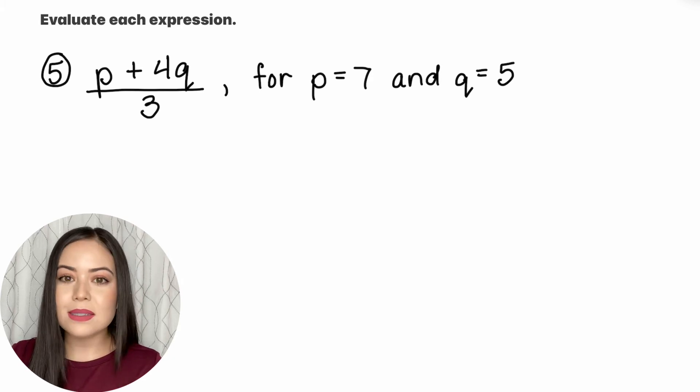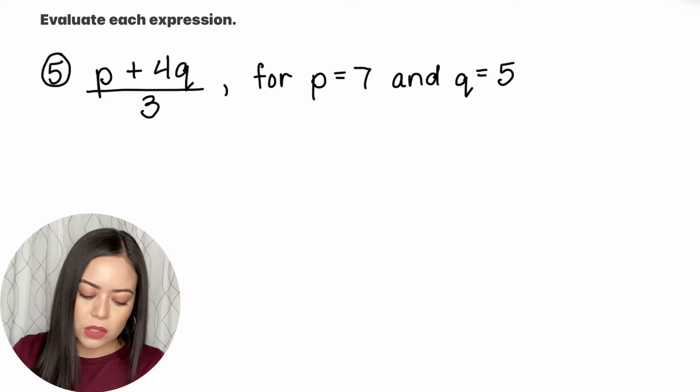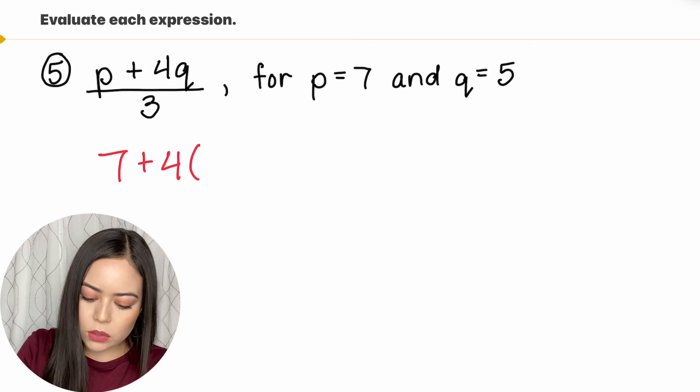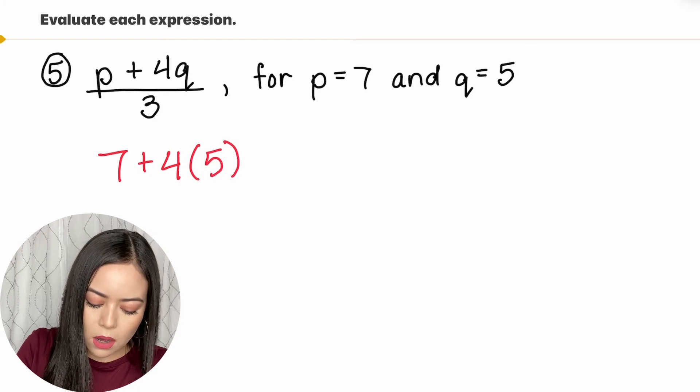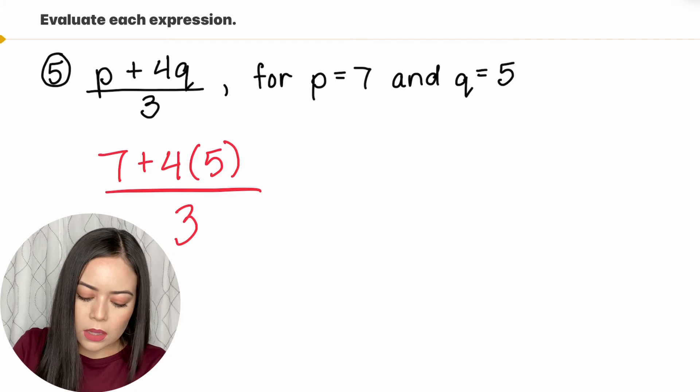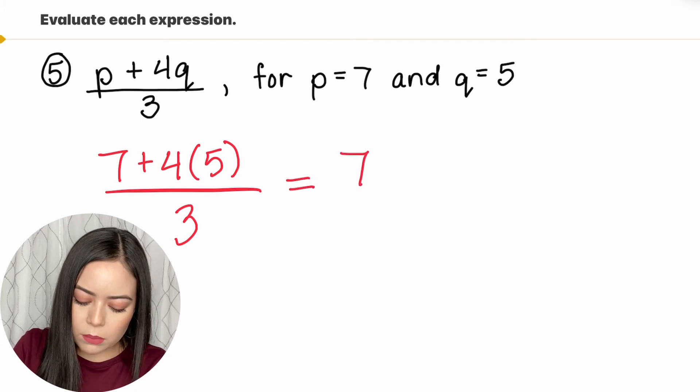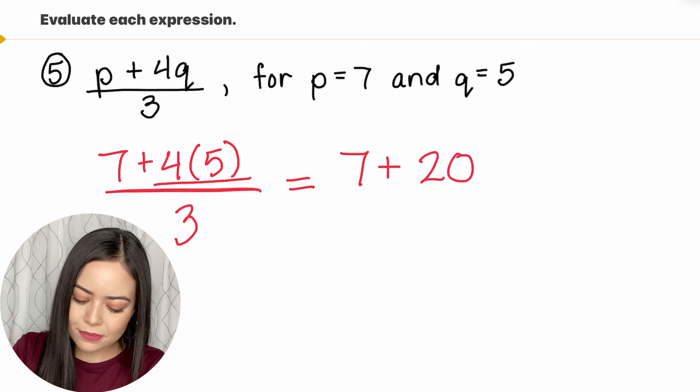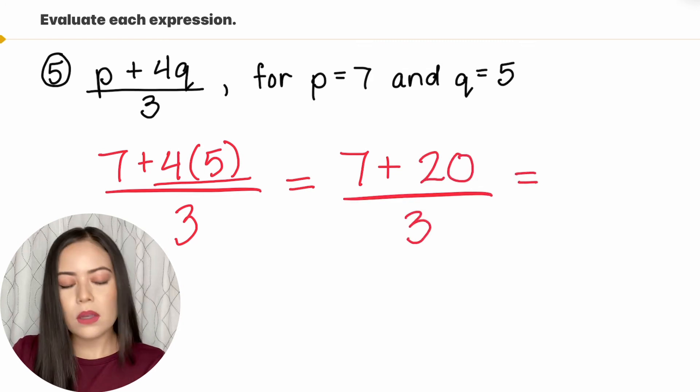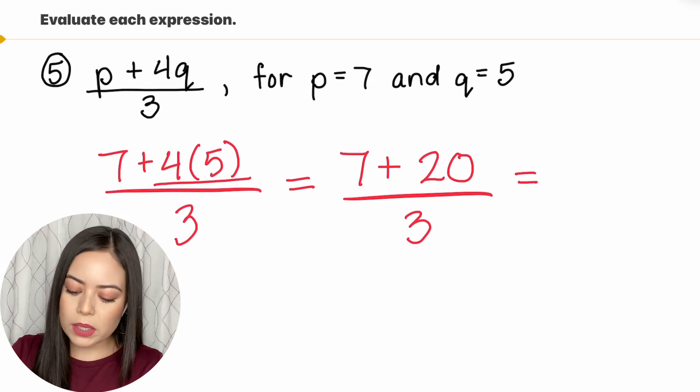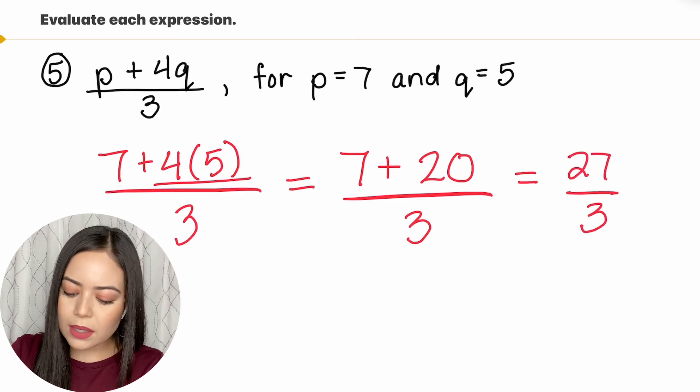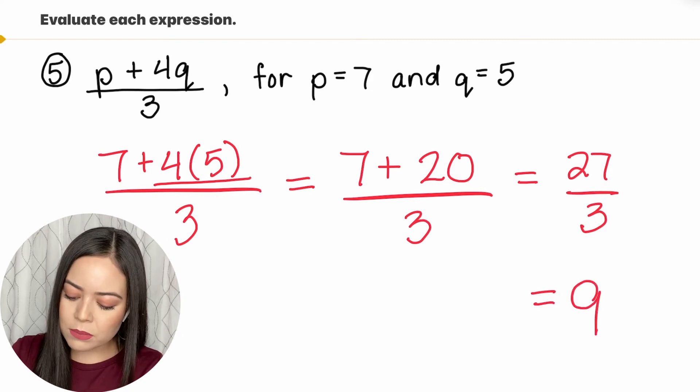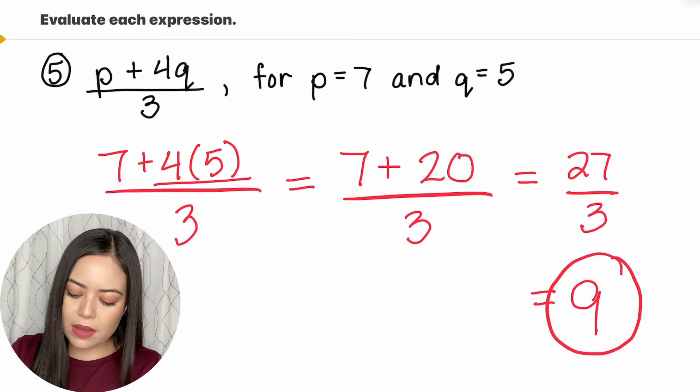So I'm going to plug in all my values. For this problem p is 7 and q is equal to 5. So p plus 4q, or 7 plus 4 times q or 5, all over 3. Let's evaluate further. So 7 plus now 4 times 5 is 20 all over 3. For the numerator 7 plus 20 is 27 all over 3. And as we know 3 does go into 27 perfectly 9 times. So the answer to question 5 is 9.